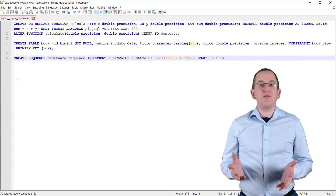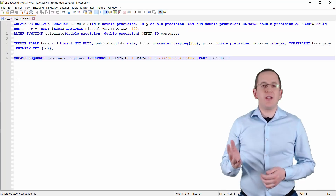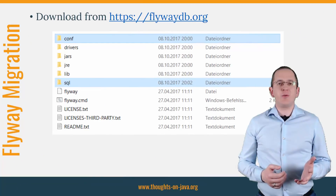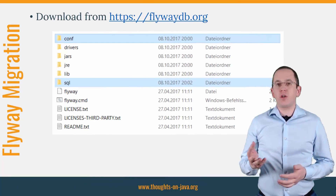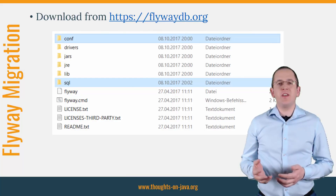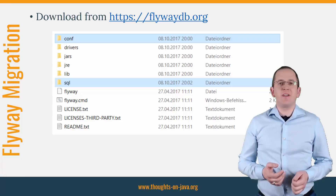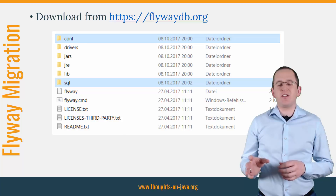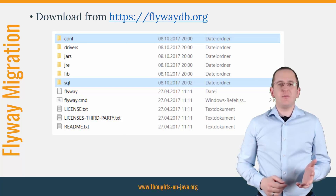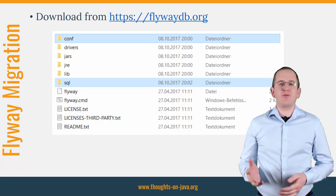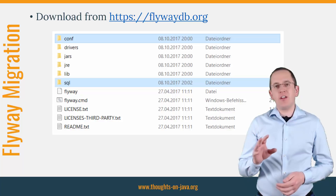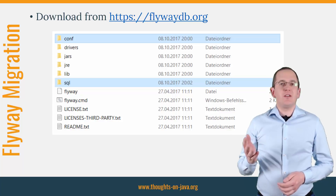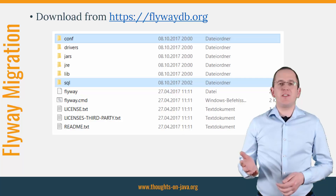That's all you need to do to define your first database migration — you now just have to trigger it. You can integrate Flyway into your application, or you can run it automatically as part of your build process, or manually from the command line. In this video, I want to show you the command line client and the Java integration. The command line client is easy to use — you just need to download the latest version from flywaydb.org, and I will add the link to the description. You then need to extract the archive to your local file system.